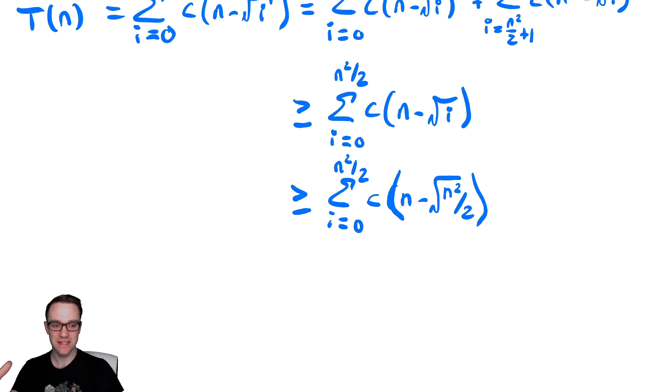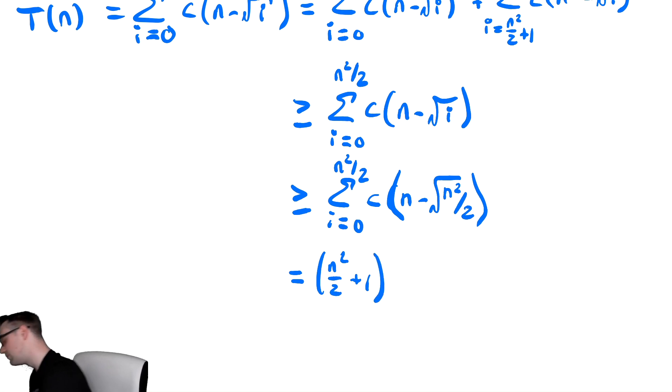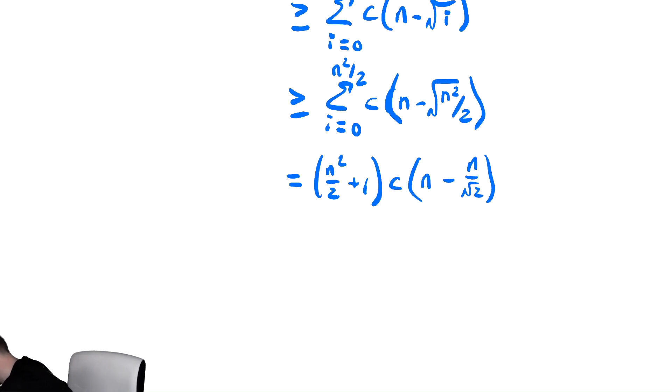Therefore, we now have a fixed quantity that we are adding up a fixed number of times. So this is equal to the top bound minus the bottom bound plus 1. Minus 0 doesn't affect us, we just have n squared over 2 plus 1. And then we have as a sum c, then n minus radical n squared over 2 is n over radical 2. And we have a bit of a nightmare again here for combining constants, so we need to be a bit careful. This is greater than or equal to, I can drop positive terms, I'm going to drop the positive 1 and bound below n squared over 2 times, I'm going to factor out an n and we have cn times 1 minus 1 over radical 2.